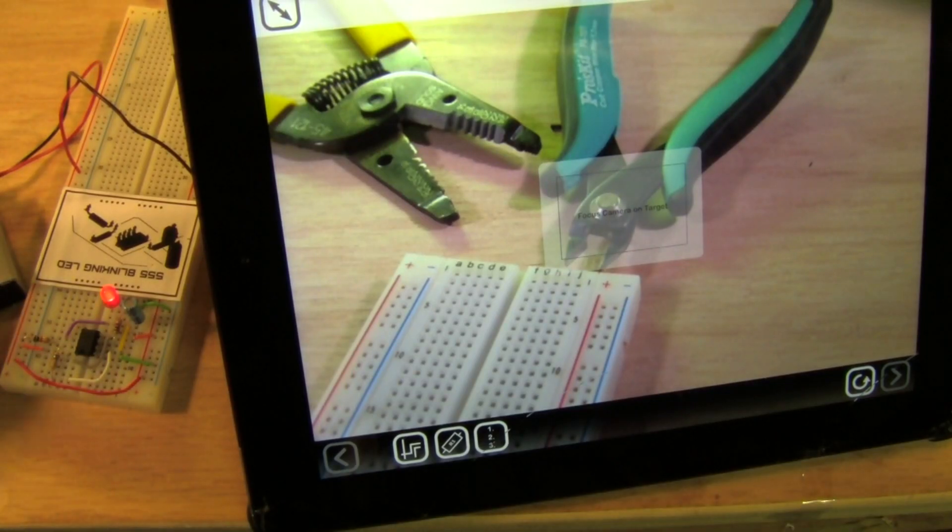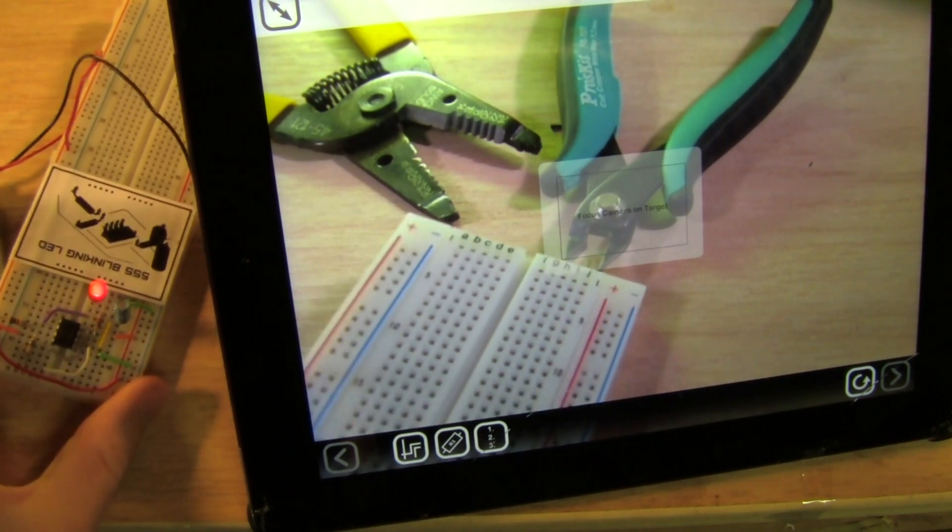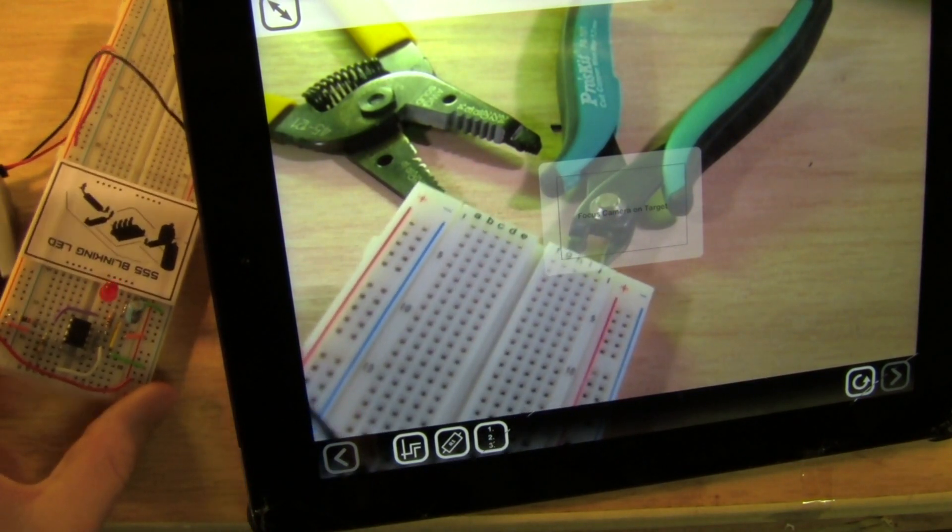This is a prototype of an augmented reality circuit building guide and I'm going to demonstrate on this simple 555 based LED blinking circuit.